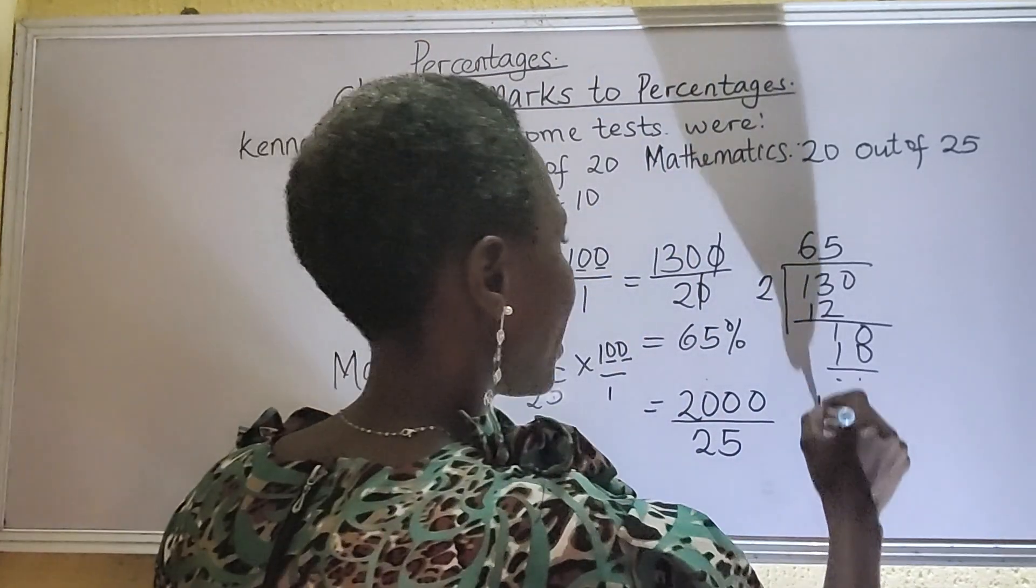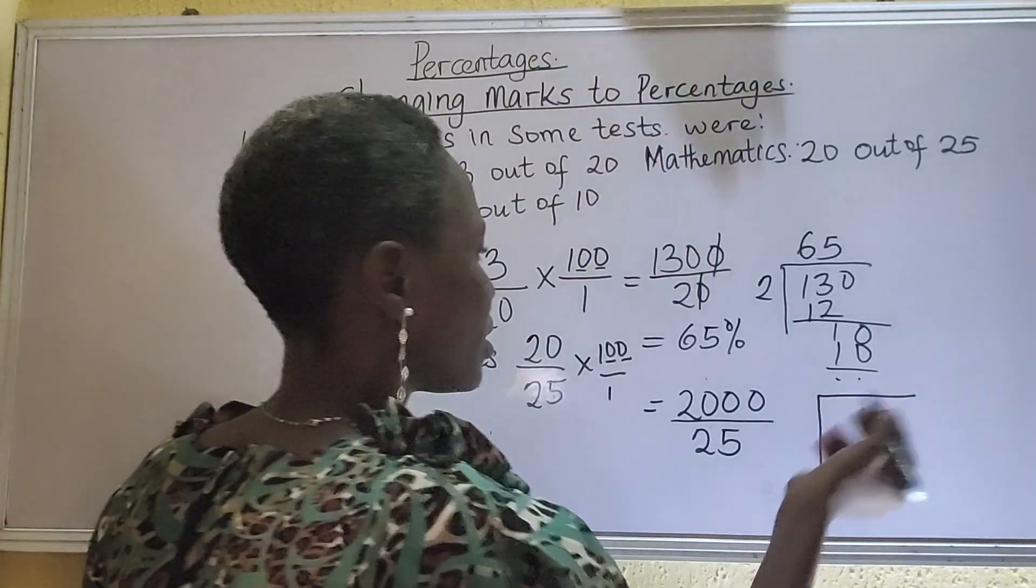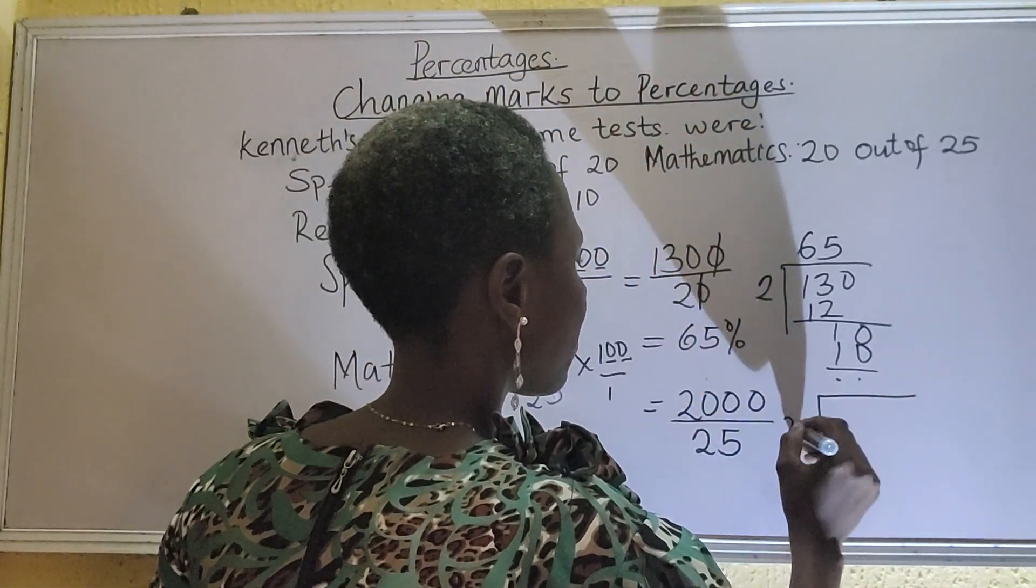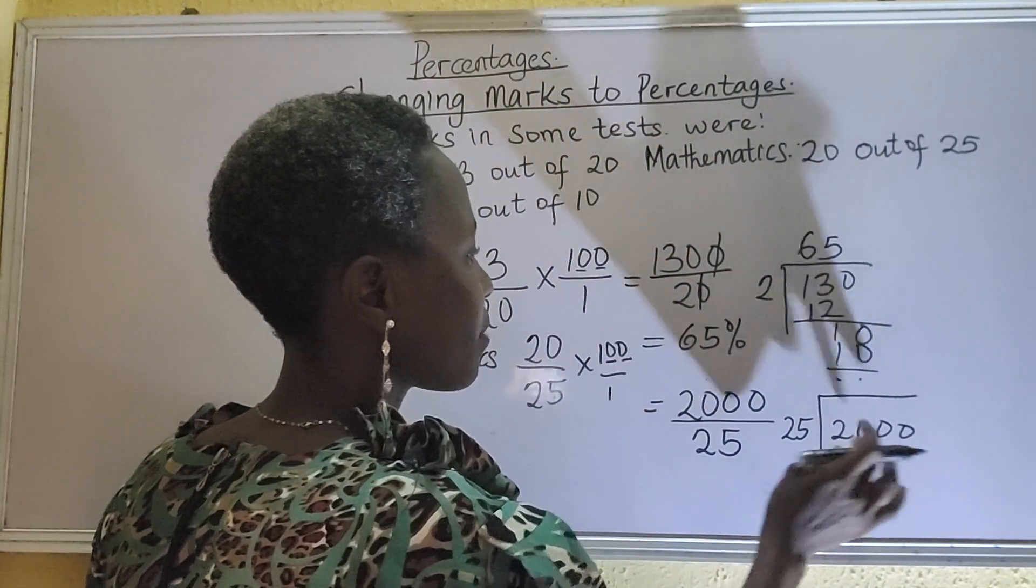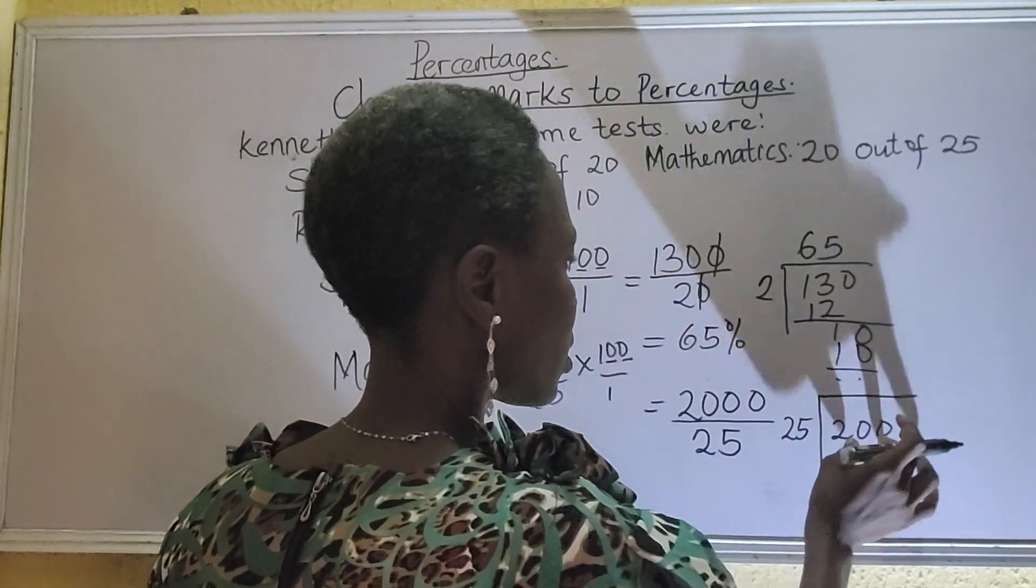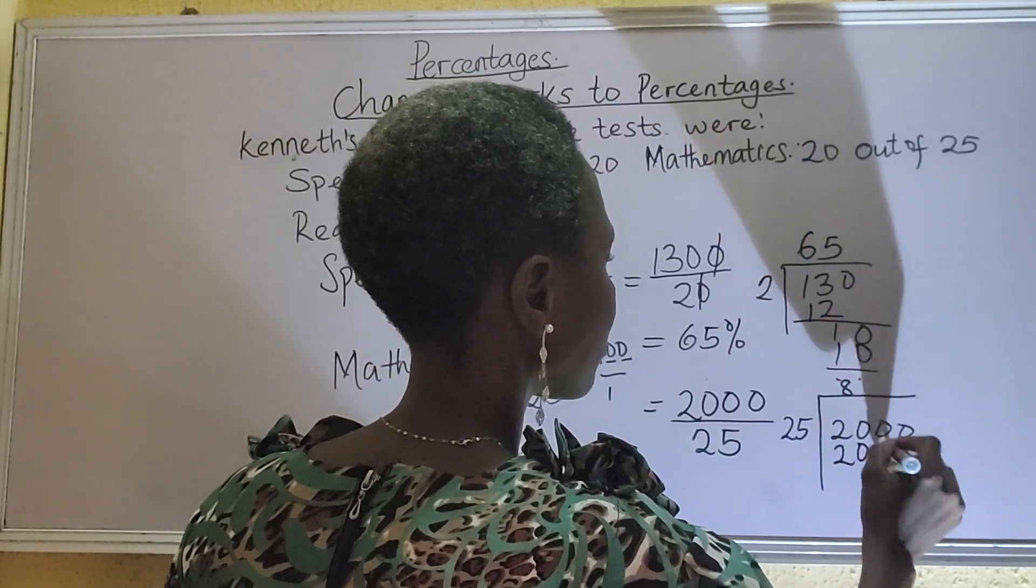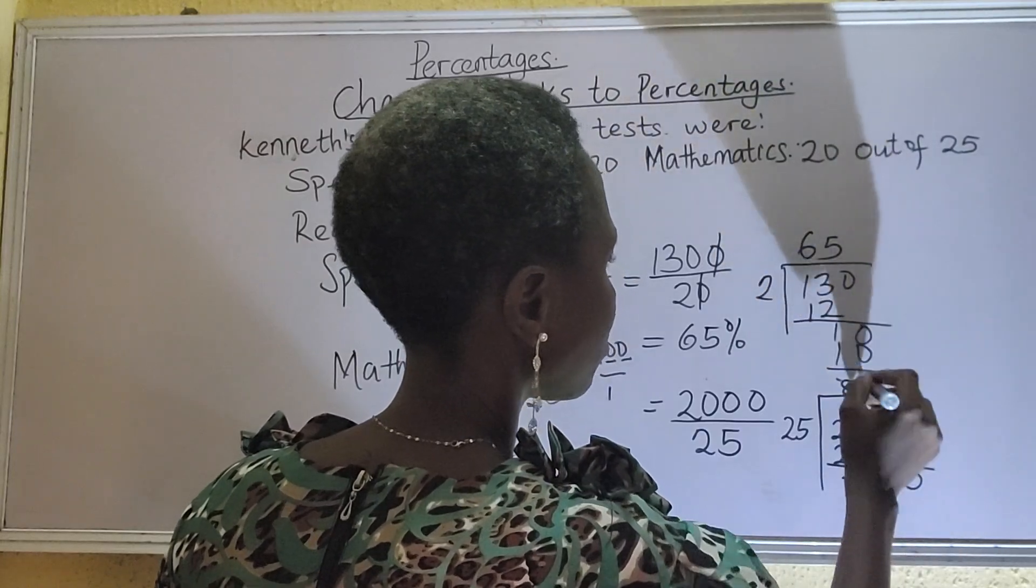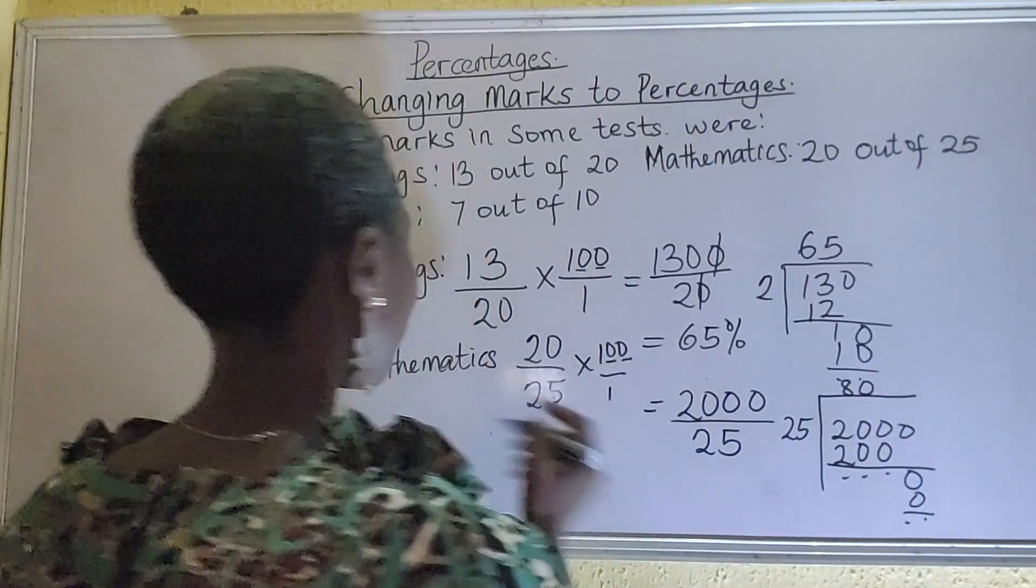So you can divide like the way I did. Actually, 5 can divide, but then let's go this way. We have 25. We have 2,000. So 25 in 200, that's 8. 25 times 8, that's 200. And we have 0 left. So we have 0.